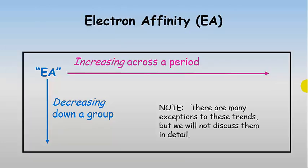There are lots of little exceptions to the trends for electron affinity and we are not going to cover them in detail. But in general, electron affinity increases with increasing effective nuclear charge. And in general, electron affinity decreases as n increases, or as the orbitals get larger and the valence electrons are farther and farther away.